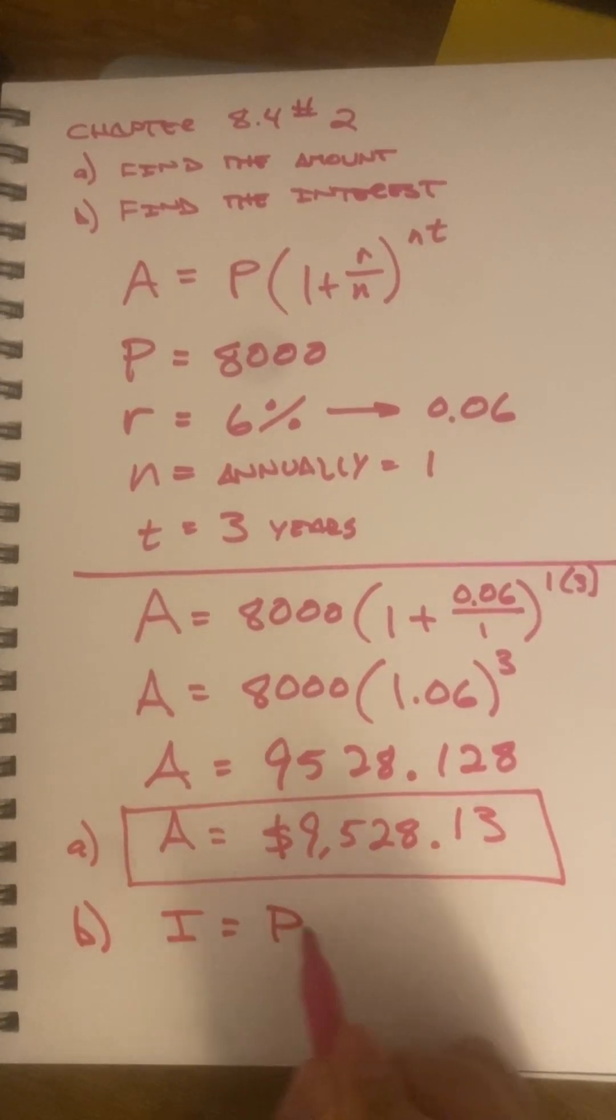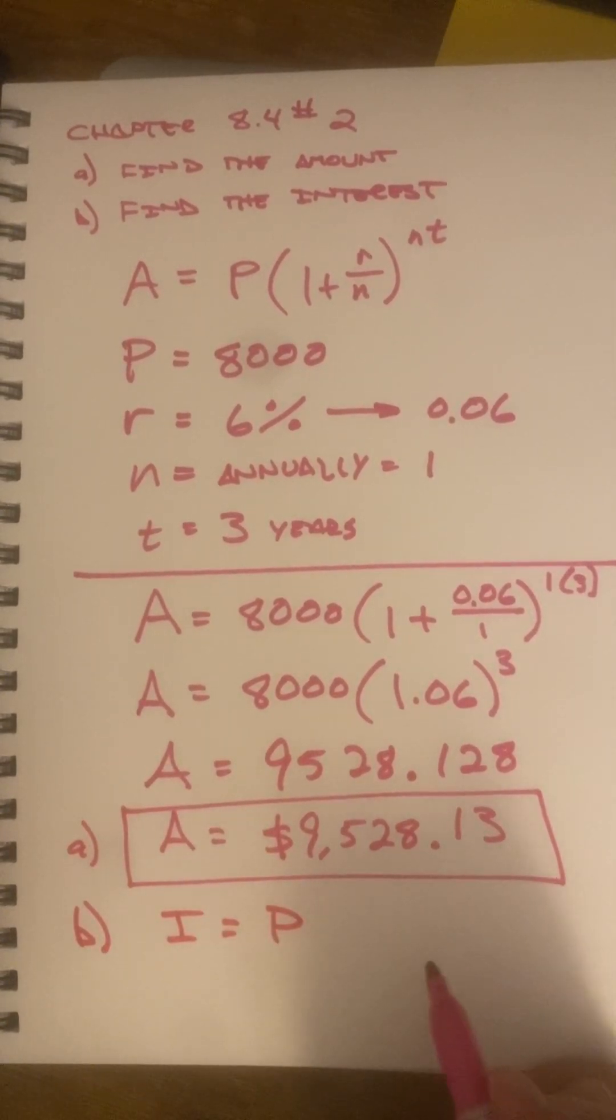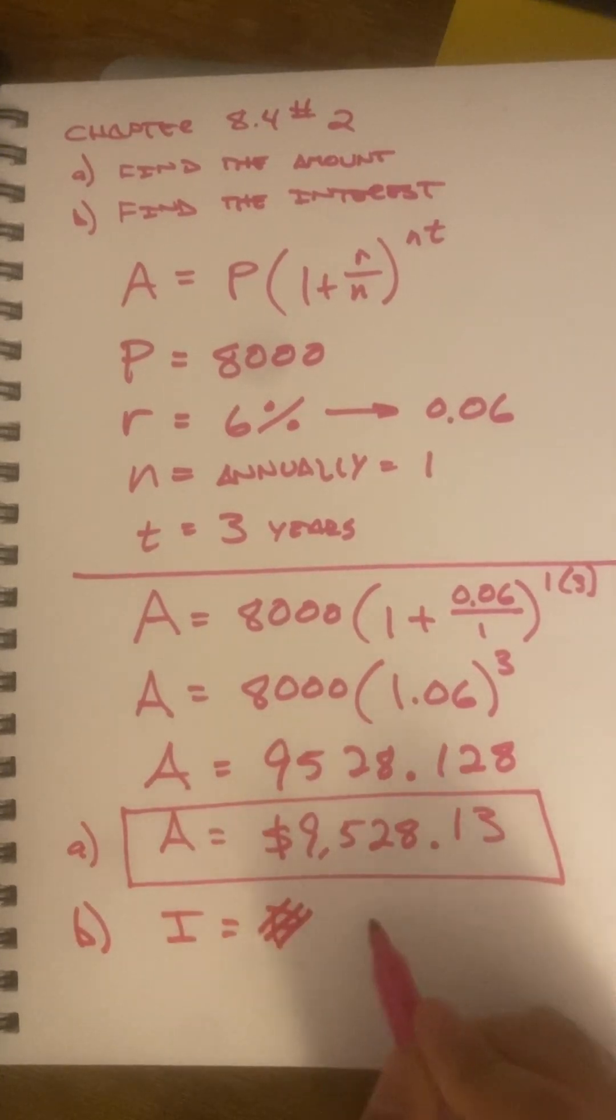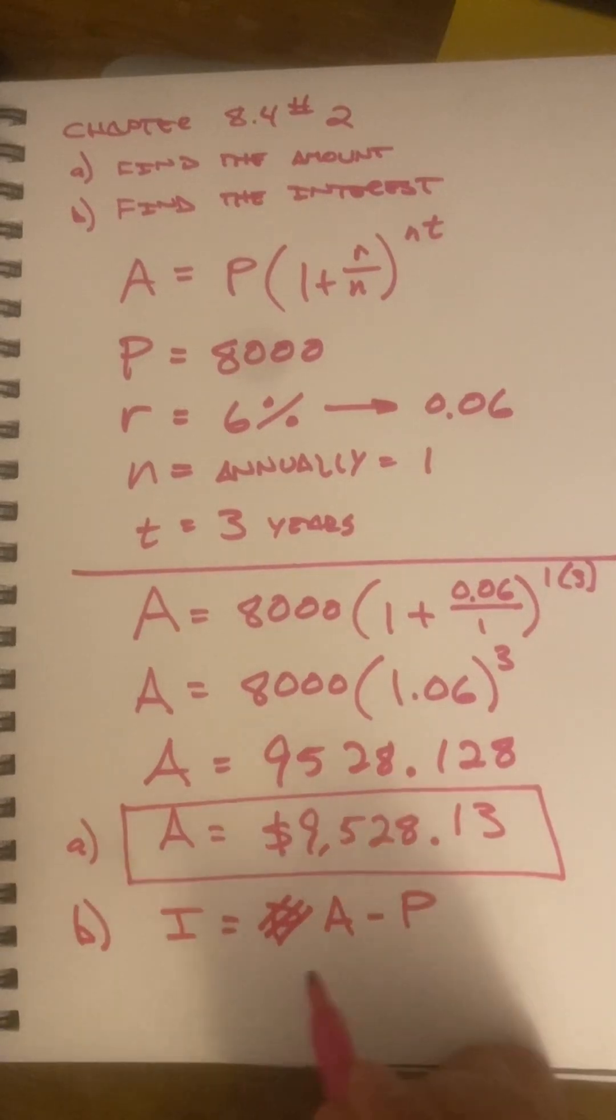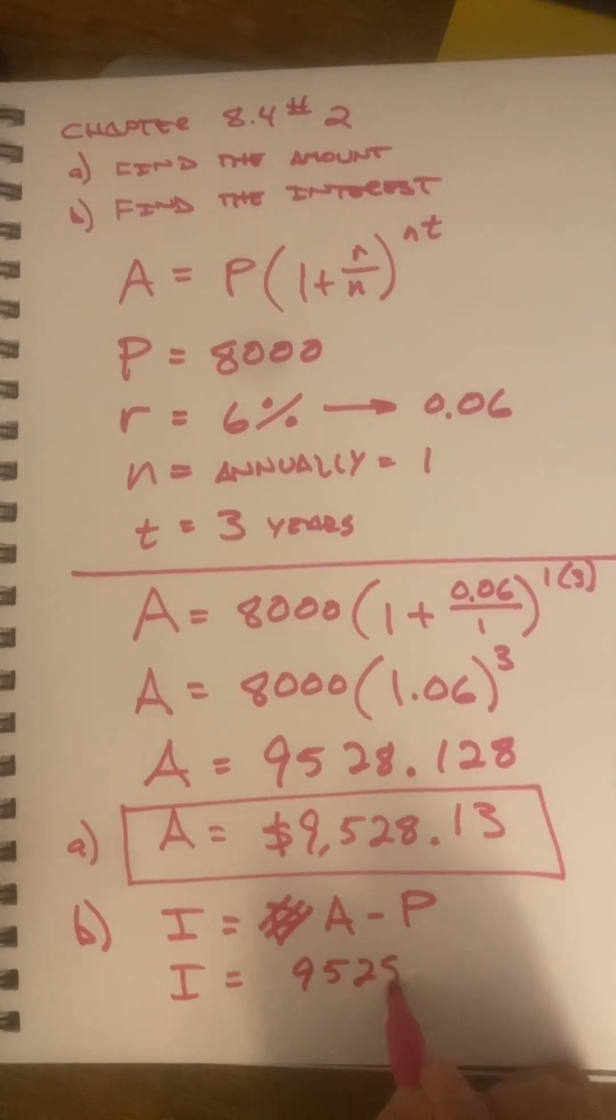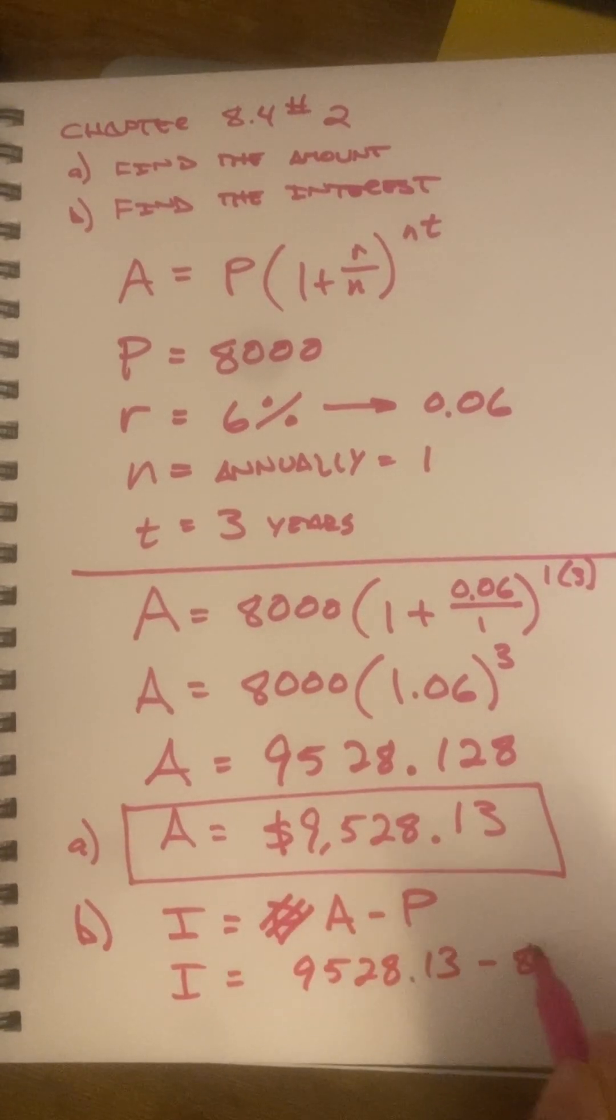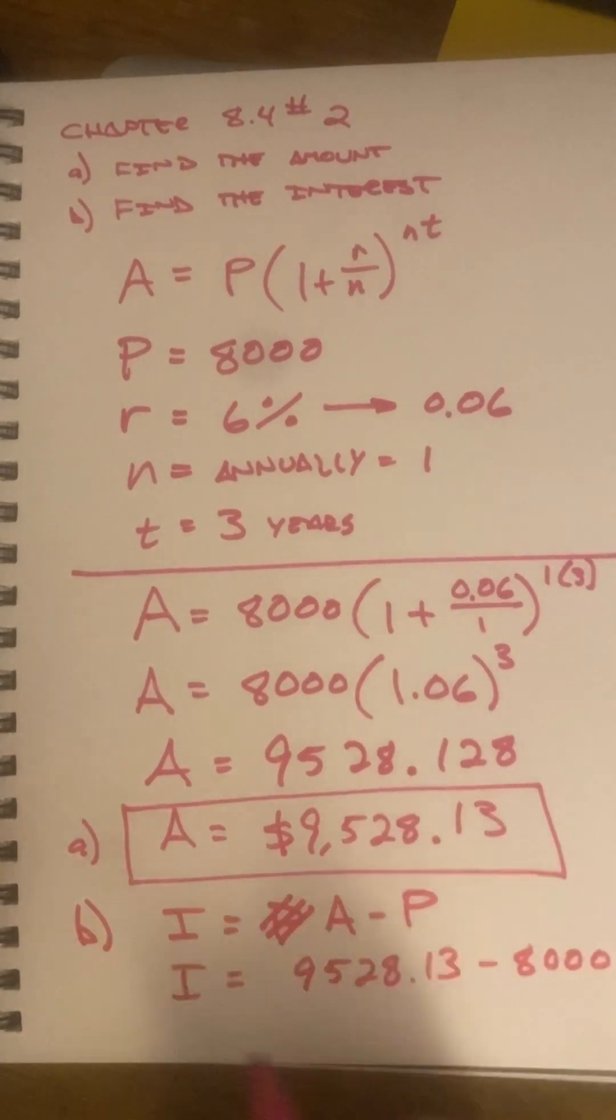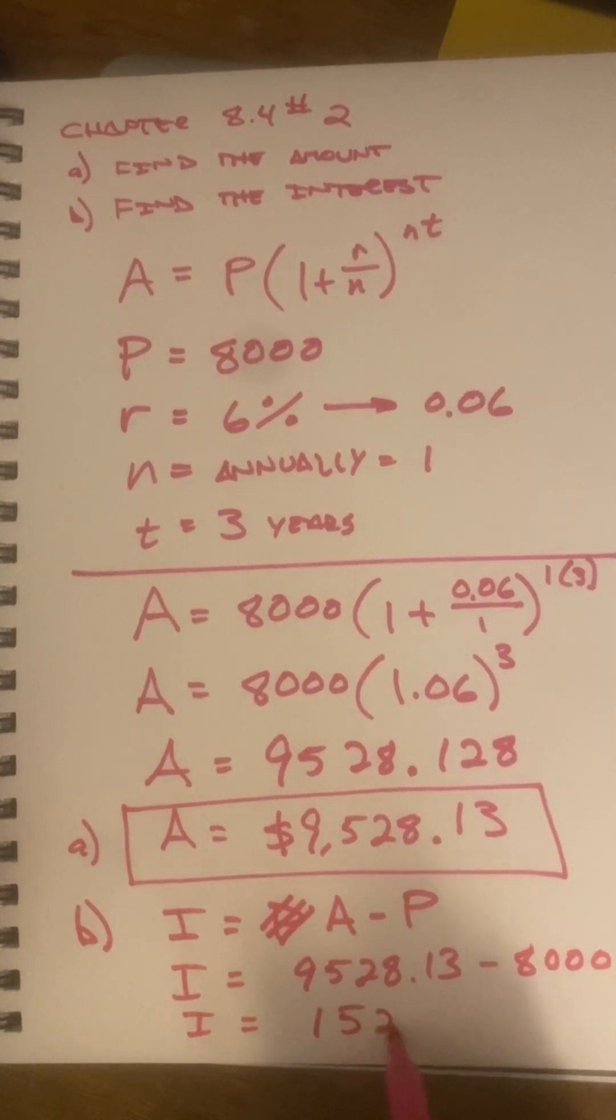That's just the amount minus the principal. So, I equals 9528.13 minus our initial $8,000. I equals $1,528.13.